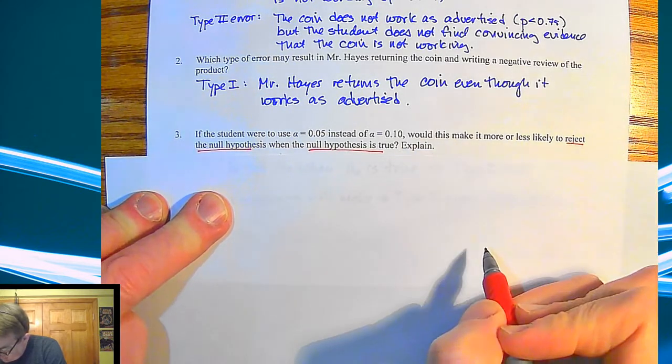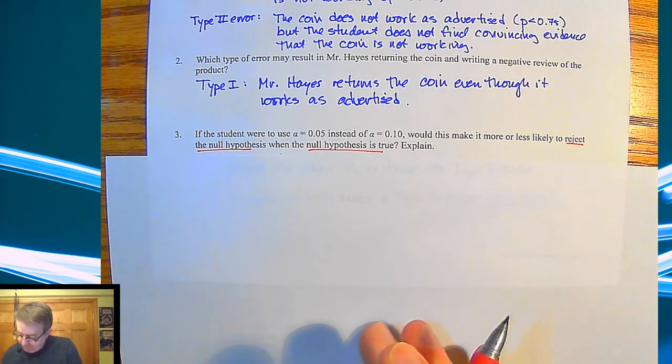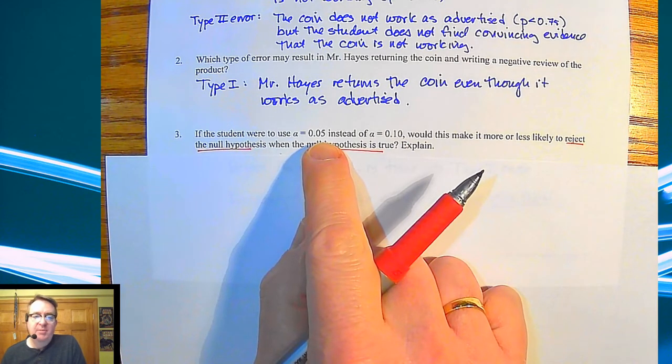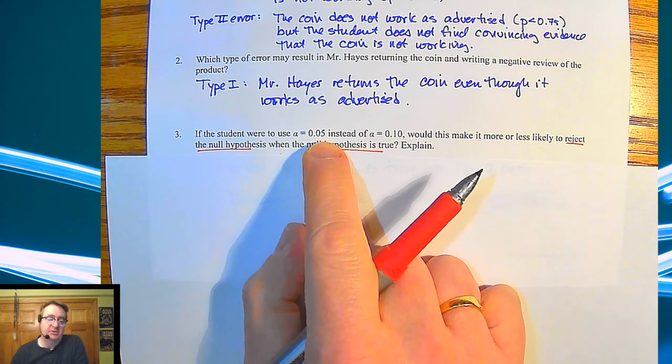So again, notice here it says we're rejecting the null hypothesis when the null hypothesis is true. Again, that is going to be Type I error.